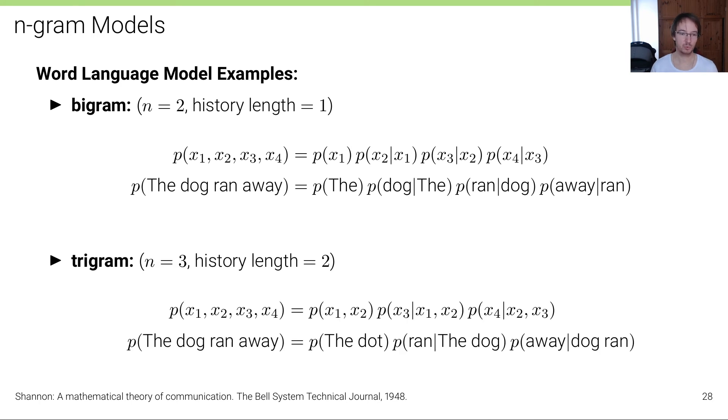Similarly for a trigram where n=3 and the history length is 2, we have p(x1,x2) times p(x3|x1,x2) times p(x4|x2,x3).